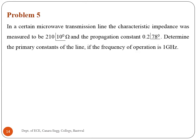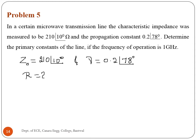Fifth problem: in a certain microwave transmission line, the characteristic impedance was measured to be 210 angle 10° ohm and the propagation constant 0.2 angle 78°. Determine the primary constants R, G, C, and L if the frequency of propagation is 1 gigahertz.